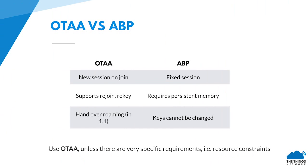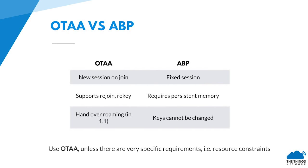In ABP you don't use a join server because there is no join procedure. It's fixed keys and they cannot be changed, and the keys must be shared with the network operator. That means it's very hard to switch networks, and if you do, it's not very secure because you cannot change the keys. ABP also requires persistent memory in the end device and in the network server to maintain and keep track of frame counters, meaning that if you have memory loss due to a power cycle or a firmware update, it renders the device unusable.